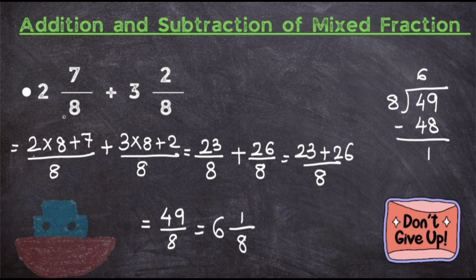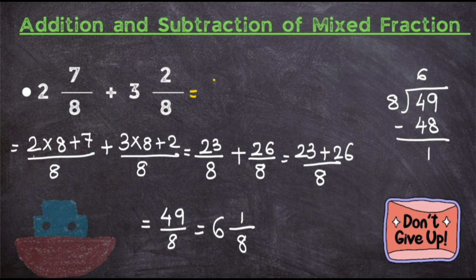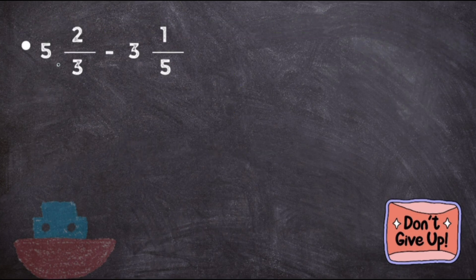So the answer for this addition, 2 7/8 plus 3 2/8, will be 6 1/8. Now let's take a subtraction question: 5 2/3 minus 3 1/5. Here you observe it is a mixed fraction, so convert them into improper fractions.